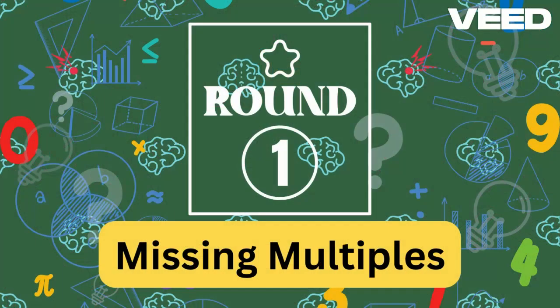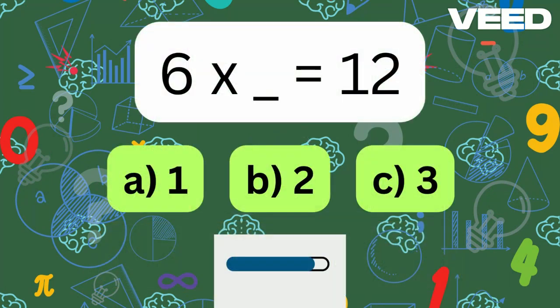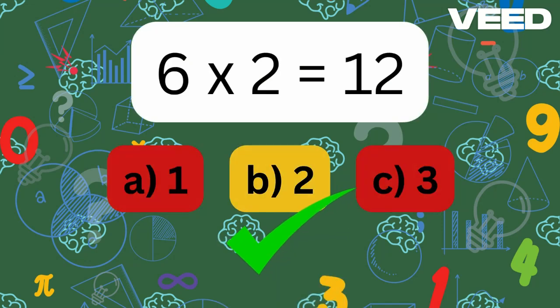Round 1: Missing Multiples. In this round, we'll see a multiplication sentence with a missing number. 6x what equals 12? 6x2 is equal to 12.